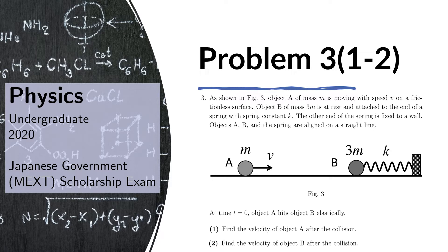Here we will answer questions 1 and 2 for problem 3. The problem reads: as shown in Figure 3, object A of mass m is moving with speed v on a frictionless surface. Object B of mass 3m is at rest and attached to the end of a spring with spring constant k. The other end of the spring is fixed to a wall. Objects A and B and the spring are aligned on a straight line. At time t equals 0, object A hits object B elastically. We need to find the velocity of object A after the collision and also the velocity of object B after the collision.